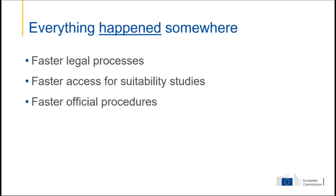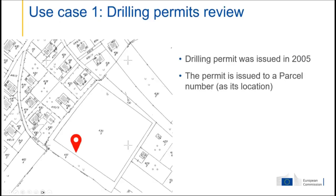A building permit in our country can last from one to three years depending on complexity — in Greece it lasts seven years. You can imagine what happens if a company wants to build a factory somewhere and it takes seven years — it's not very good for the economy. If we have this data available, we have faster official procedures. Here is one use case of how long-term geospatial records are useful in understanding legal decisions that have been made.